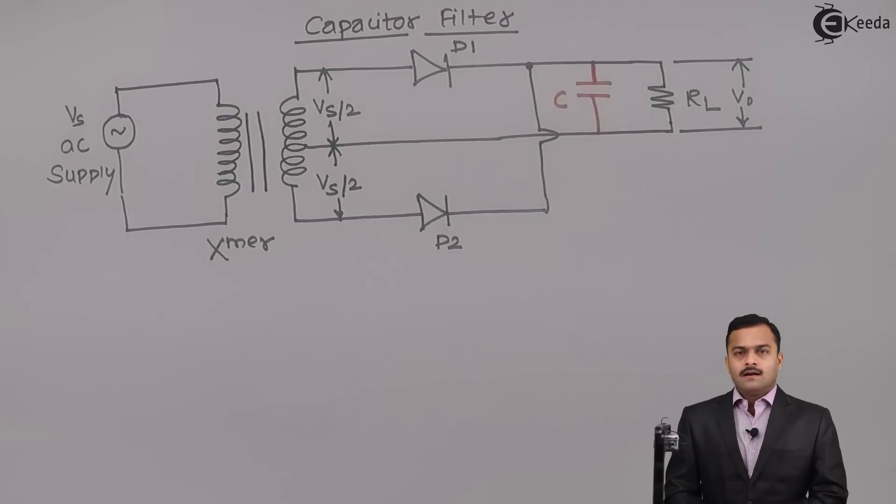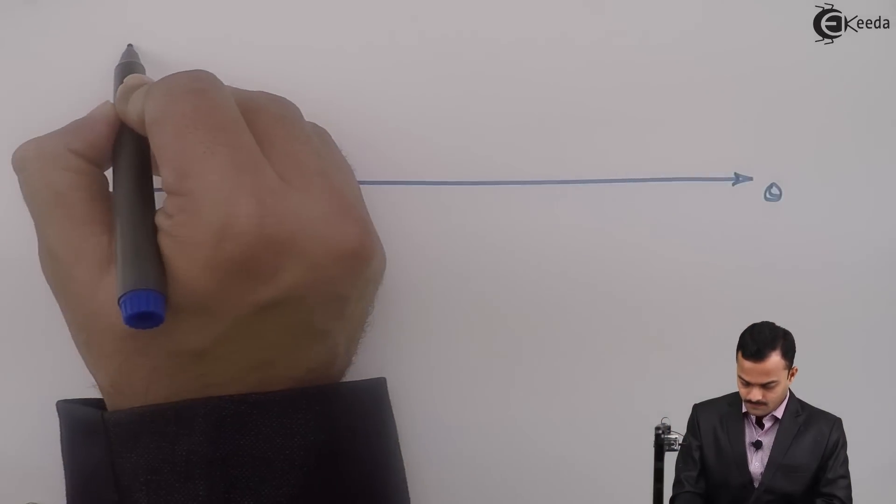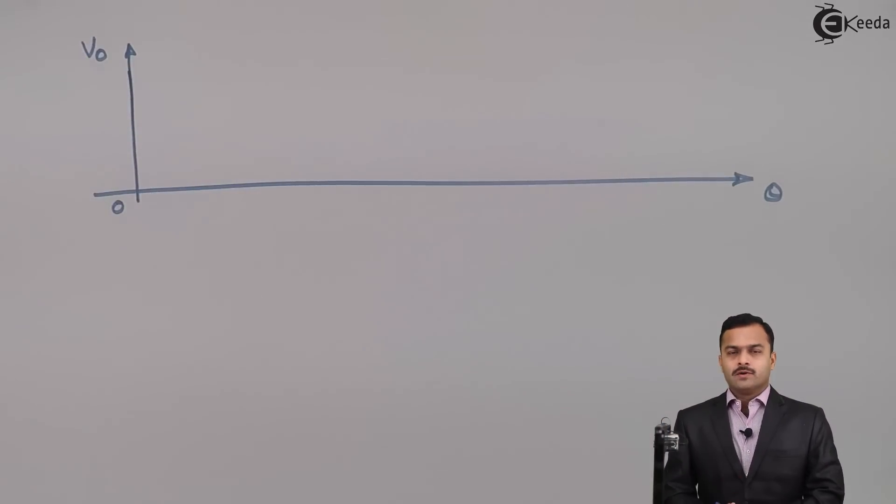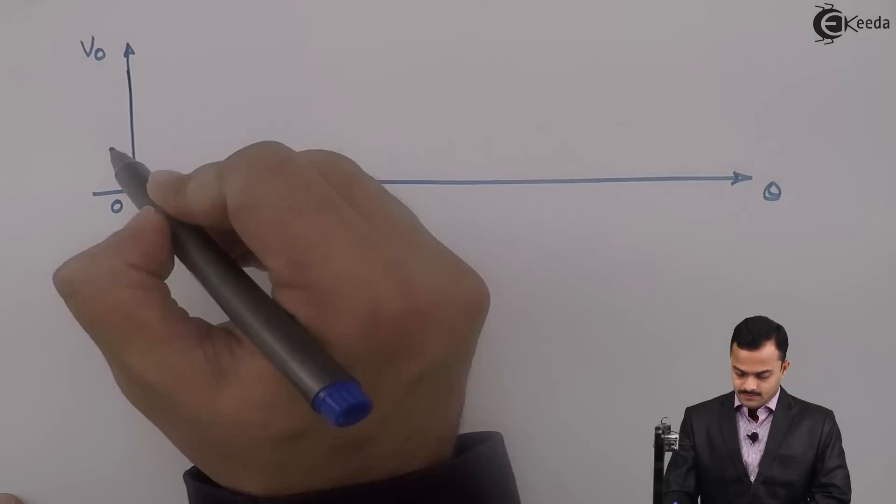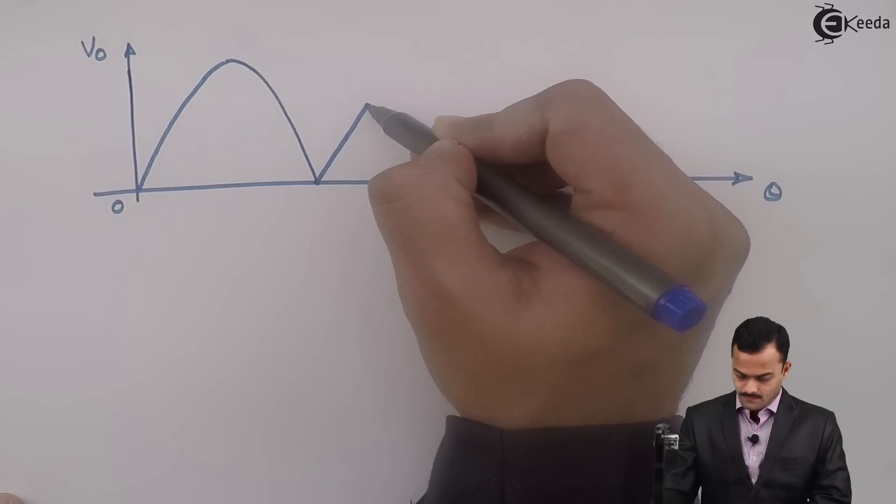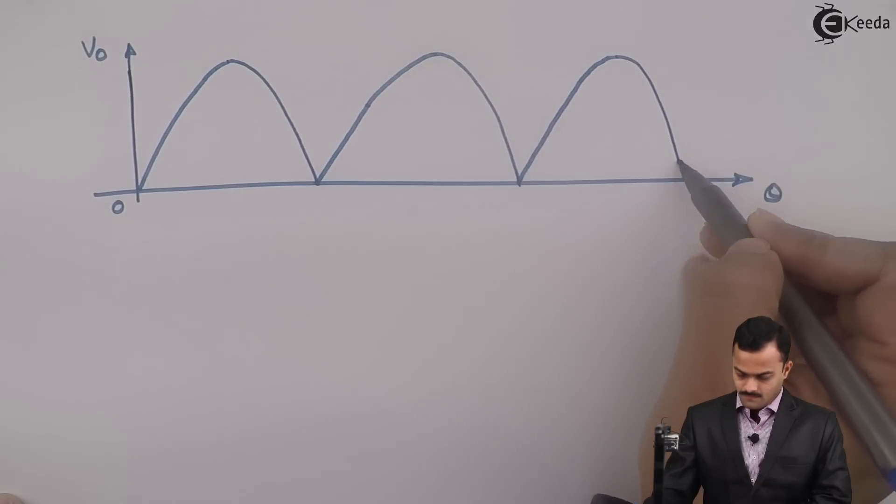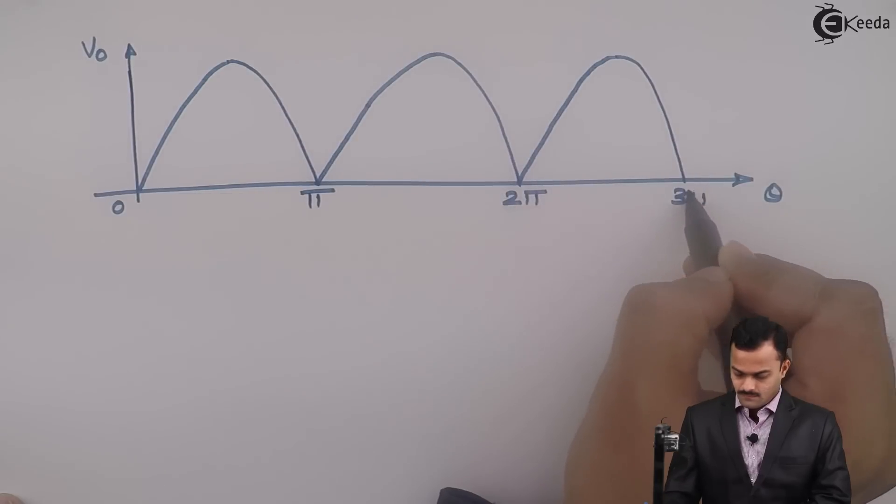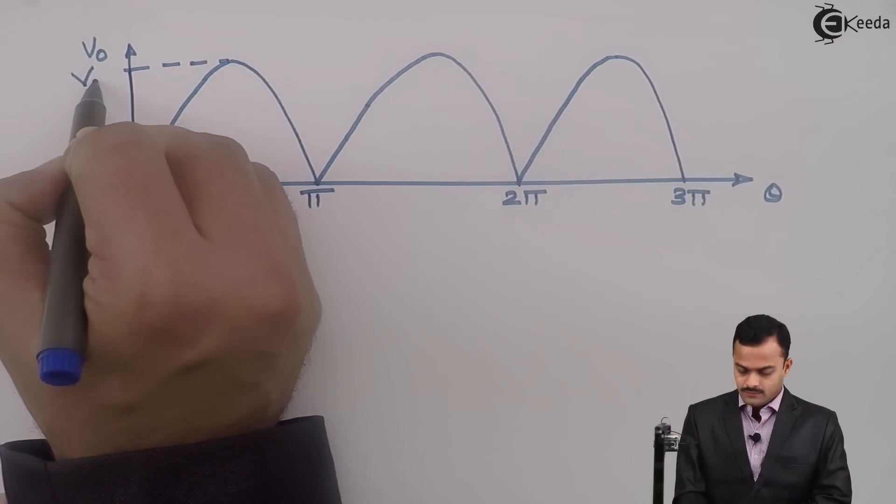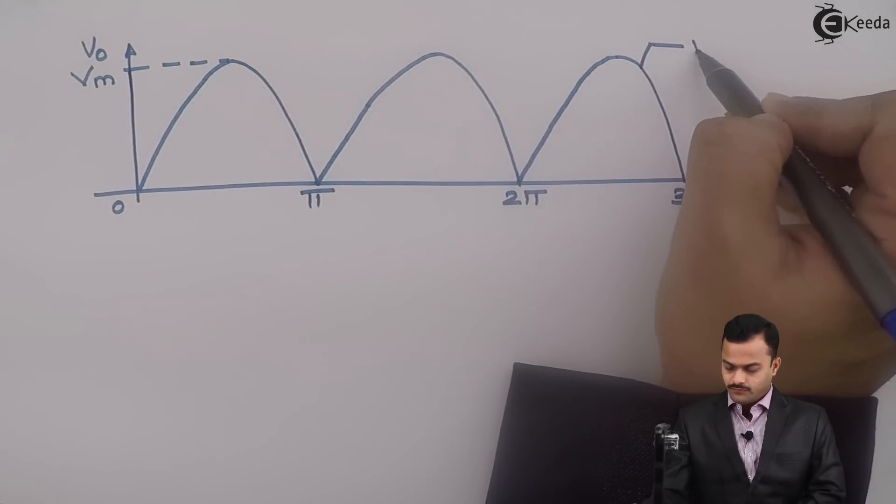For that purpose, I am going to draw the waveform of output voltage first. Let's draw the waveform of output voltage without capacitor filter. This is the peak value of the output voltage Vm. This is the waveform without filter.